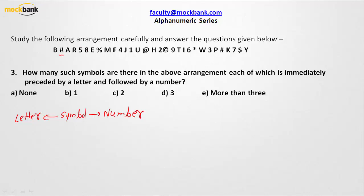These are the symbols — let us observe them separately. This symbol must be preceded by a letter, but it must also be followed by a number, so this is not an option. How about the percentage mark? The percentage mark is preceded by E and followed by M — that is also not the case, because M should be a number for it to qualify.